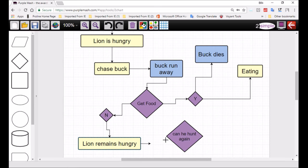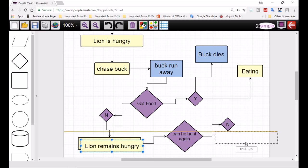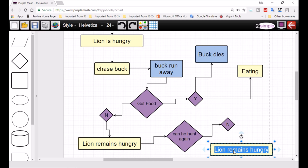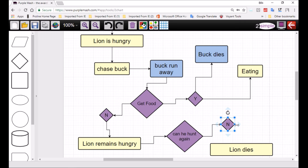So we ask can he hunt again. Now if the answer is no, he's so weak and hungry that he can't even run anymore. What's going to happen? Then he would be putting his life in jeopardy and then the lion would die. Die, lion dies. So if you look over here, lion then dies.